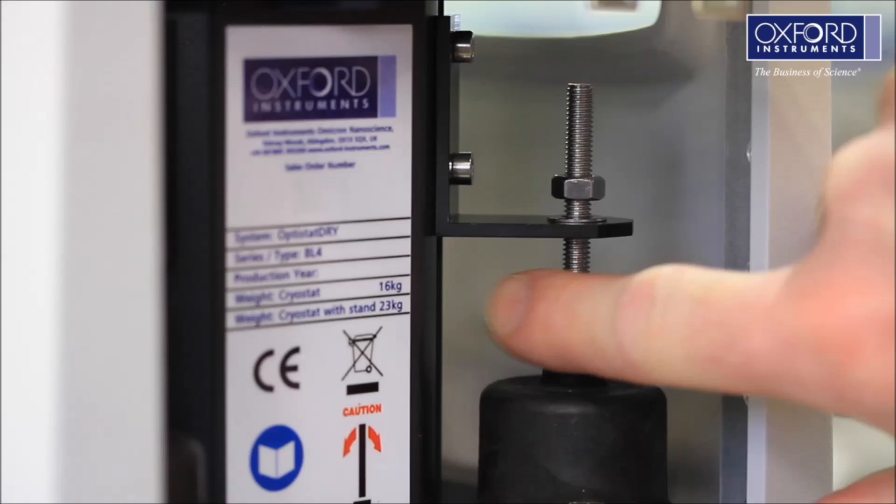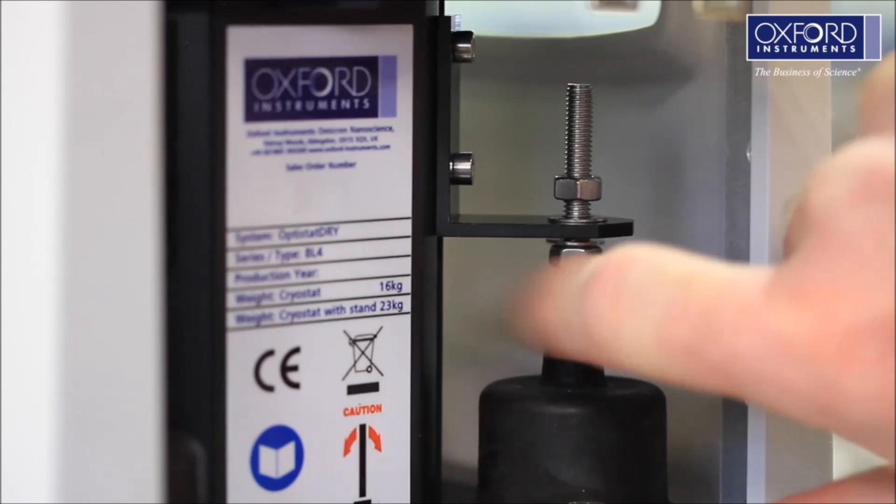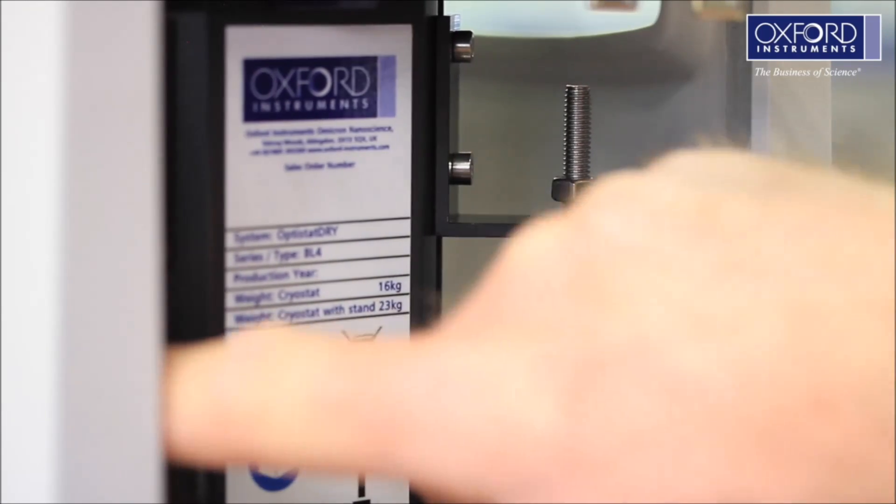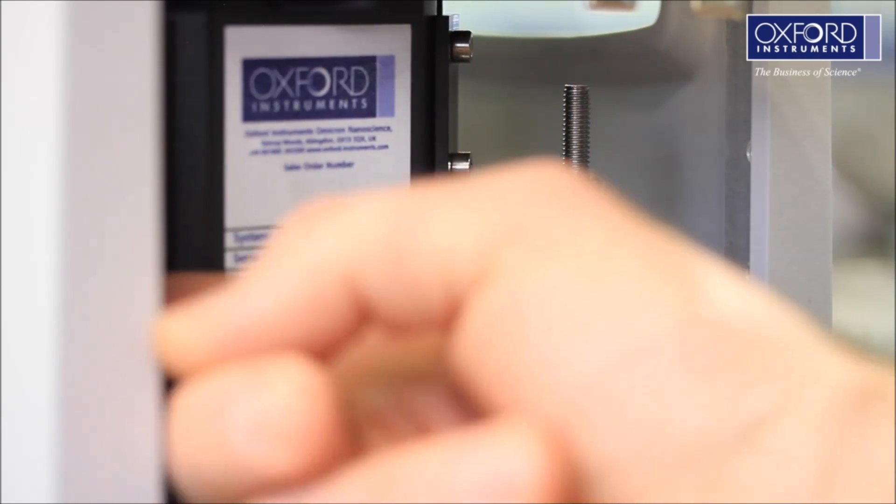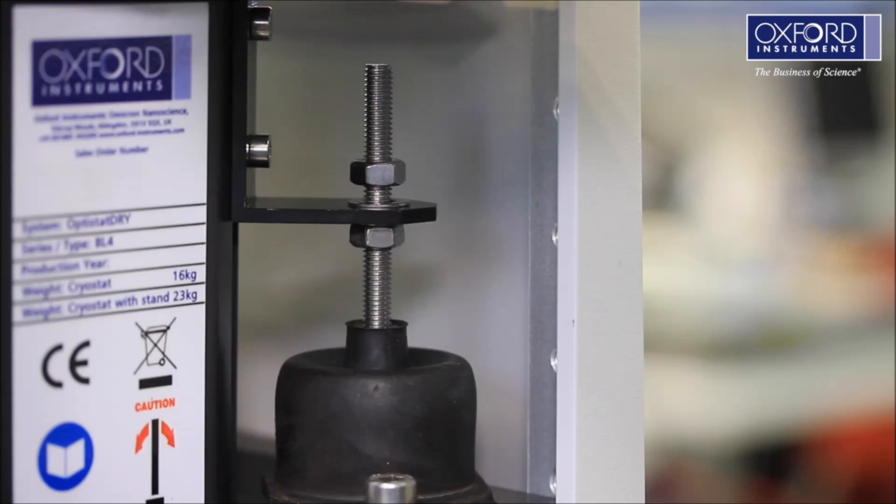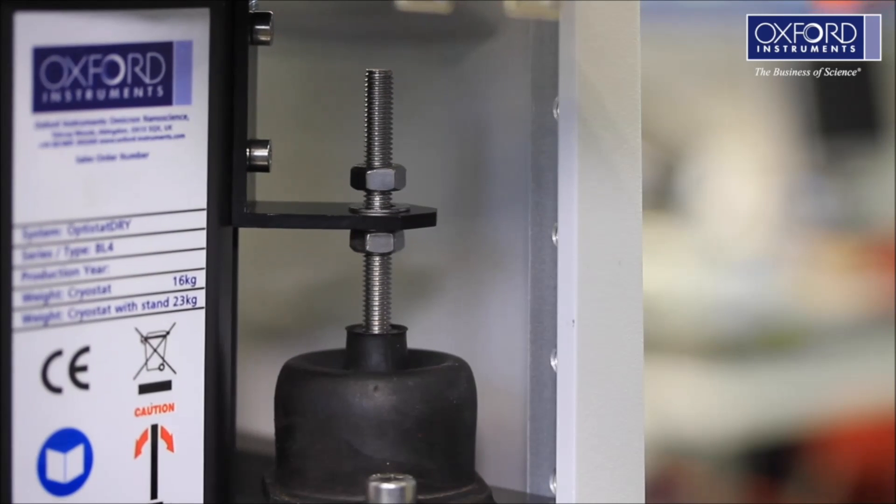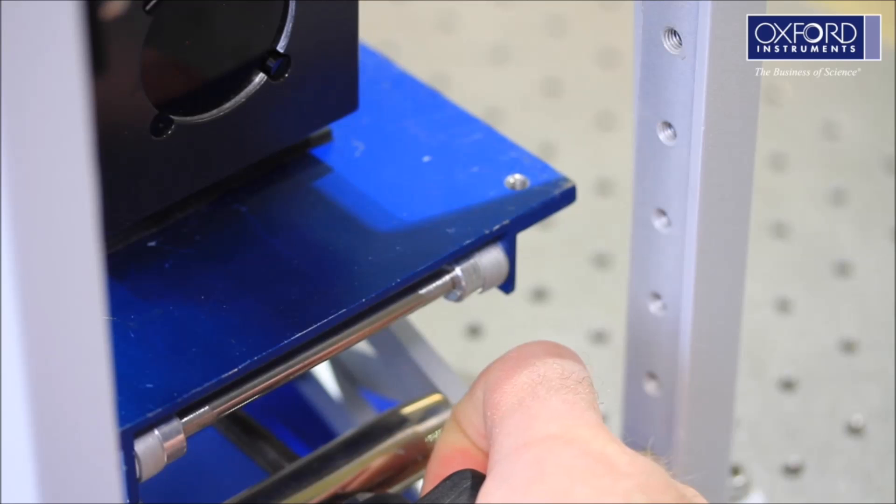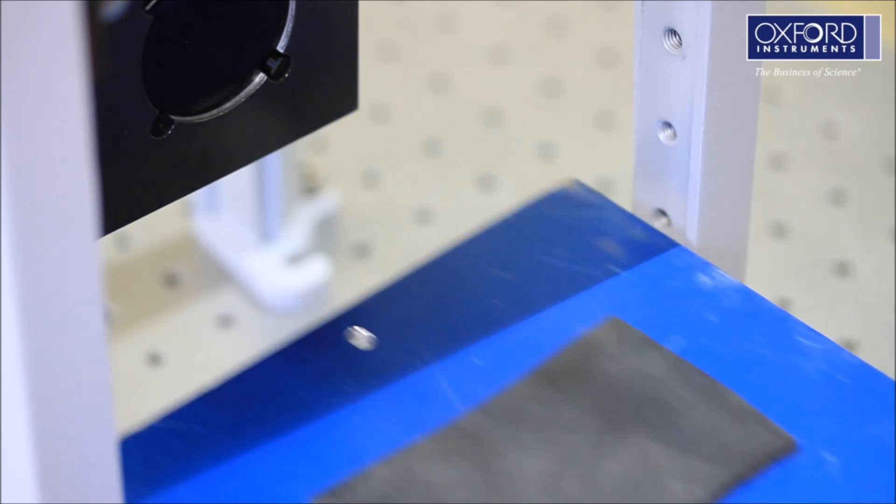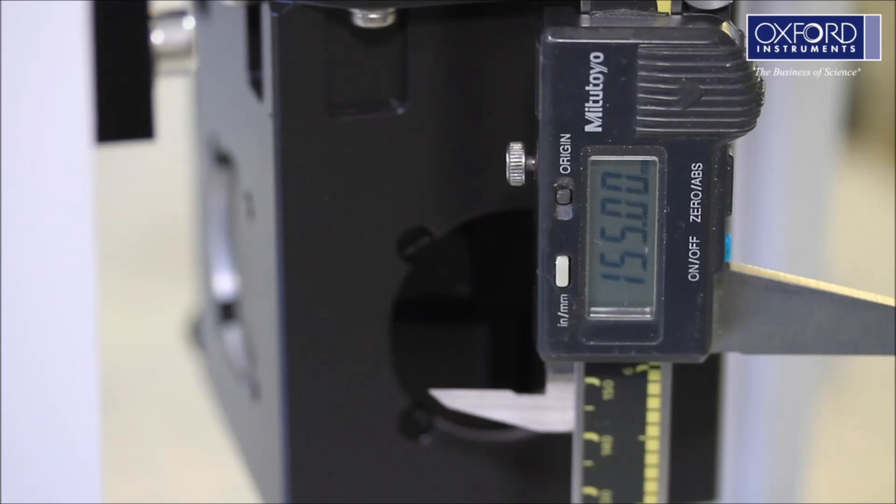When you get to the correct height, adjust all four lower M6 nuts so they touch the bottom of the L brackets. Lower the laboratory jack and remove it. When you do this, the vibration mounts will compress by a small amount. You may need to repeat this process to get the exact height you need.